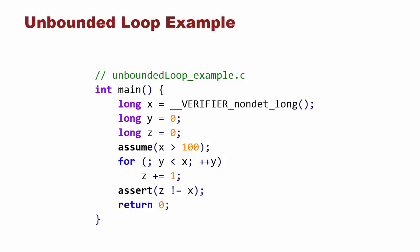Our second example highlights Duality, which is a backend that adds support for proving correctness of unbounded loops, among other things. Here we assign x to be a non-deterministic long, initialize y and z to 0, then assume x is greater than 100. A loop is then entered and z is incremented during each iteration. We erroneously assert that z is not equal to x. Typically, with a bounded verifier, loops are unrolled up to a bound n and bugs requiring more than n iterations will not be found. Duality performs invariant inference using constrained horn clauses to prove correctness of unbounded loops such as this.